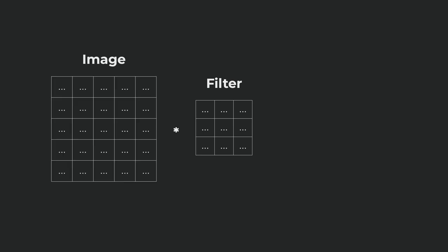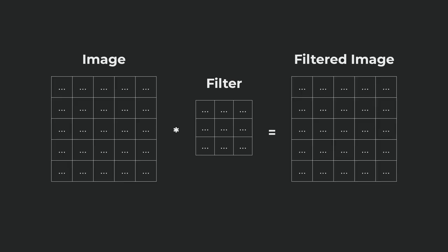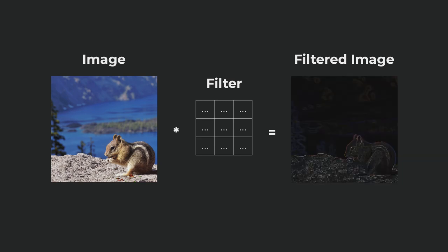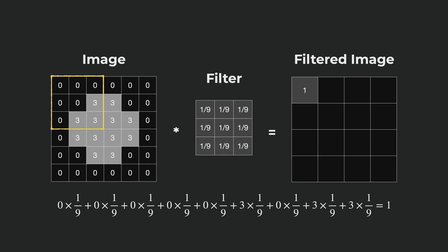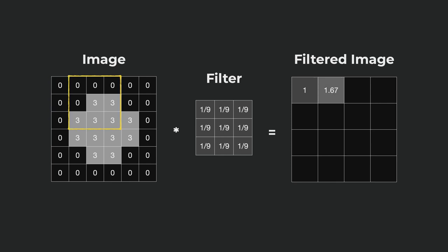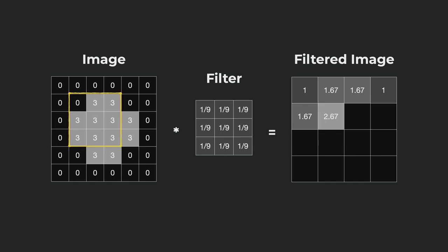An image filter is a small matrix that we apply to image matrices to achieve certain effects, such as blurring, sharpening, and edge detection. To apply a filter to an image, we multiply matrices element-wise, sum the products, and do this over the entire image by sliding the filter over the image. This operation is called convolution, or cross-correlation. Although convolution and cross-correlation are not exactly the same, they're usually used interchangeably in the context of image processing.